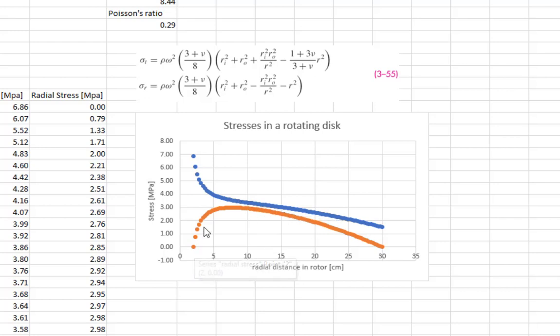You'll notice that the highest stress is in the hoop direction and at the inner boundary of the rotating disc. I mean, this makes sense. And so the more mass you have rotating trying to pull away, the higher the stresses will be.